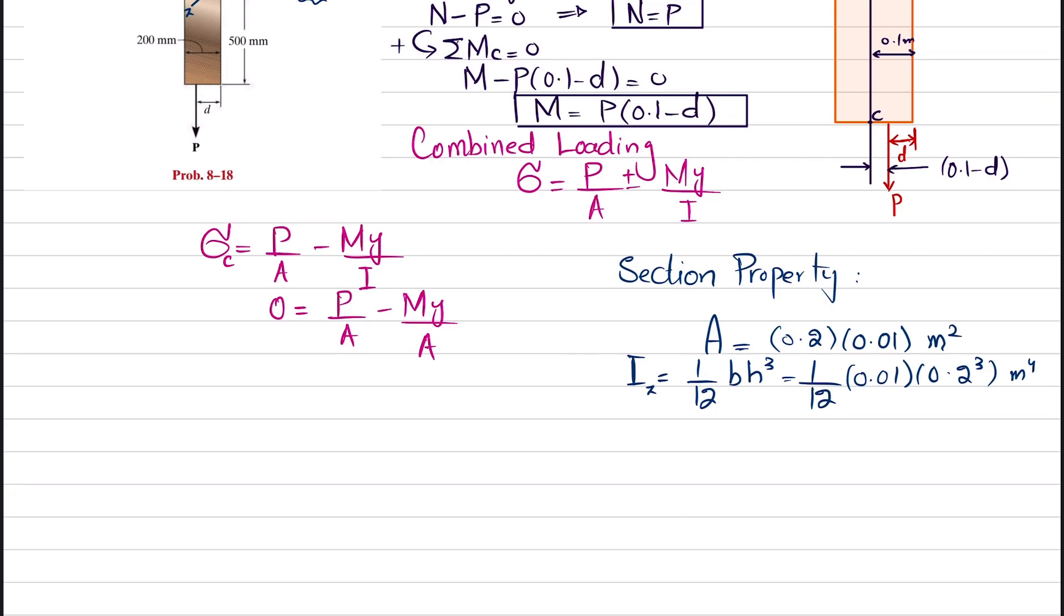Now substitute in the formula. Zero equals P divided by (0.2 times 0.01) minus M equals P times (0.1 minus D) divided by 1/12 times 0.01 times 0.2 cubed. If you simplify and take P as common, you get P times (minus 1000 plus 15000D) equals zero.